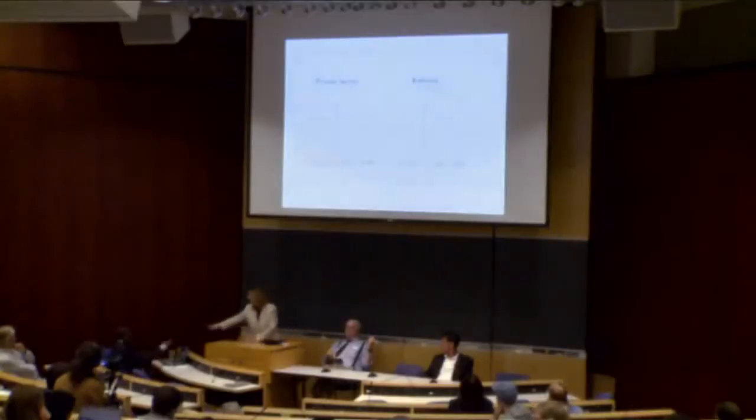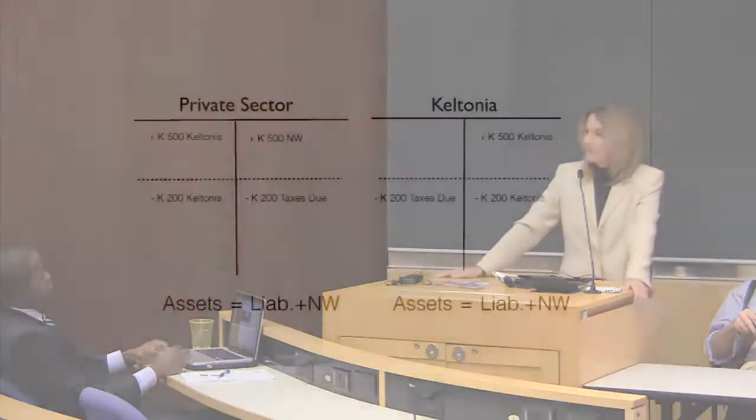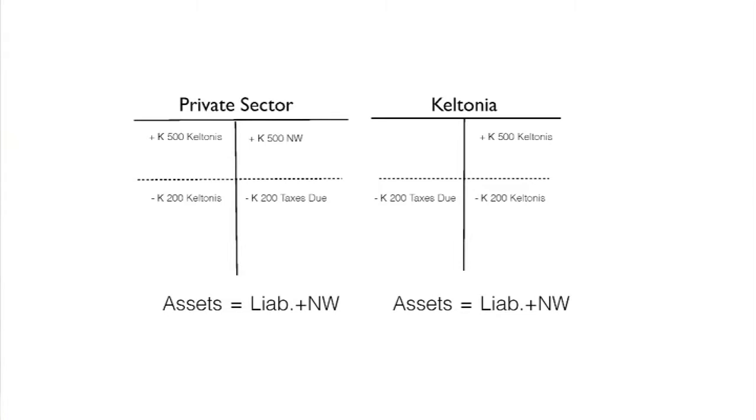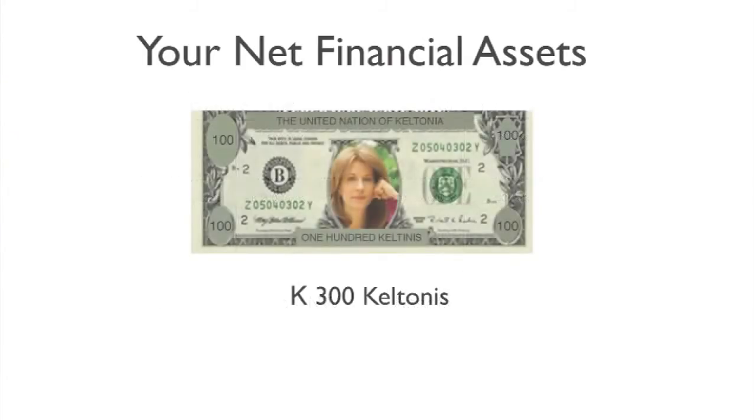I'll hire some of you — you'll build roadways for me and I'll pay you keltones, then you can pay your taxes. I'll pay you 500. I credit your account, I made you the 500. Now let's settle up — taxes are paid. What are your net financial assets? 300 keltones.